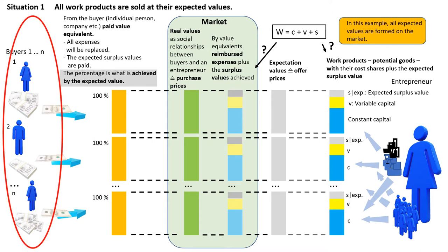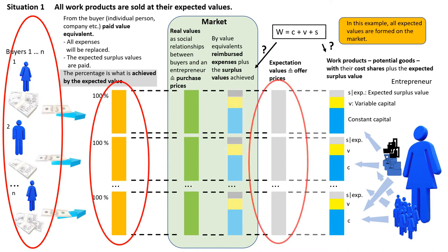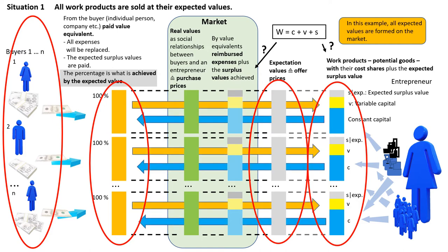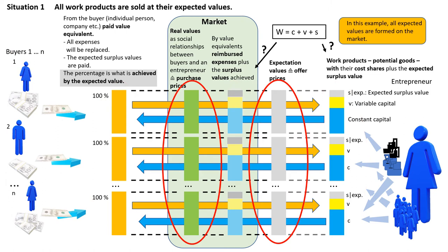Potential buyers who have enough money to buy the products are shown on the left. Three of the potential buyers dispense a value equivalent in the amount of the offer price in exchange for a work product each, which thus changes from a potential to a real commodity. By exchanging the work product for a value equivalent, the social usefulness of the expenditures C and V is accepted in accordance with the amount of money, and in many cases the demand for surplus value is also fully or partially accepted. This is how the value is formed.